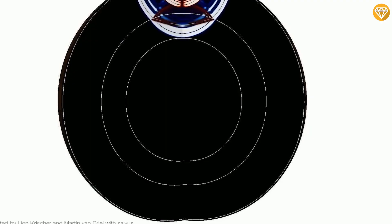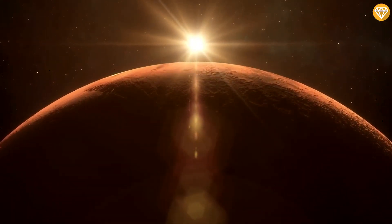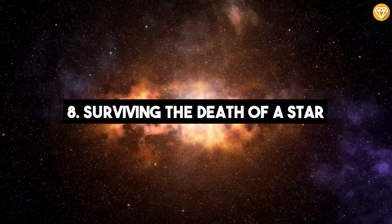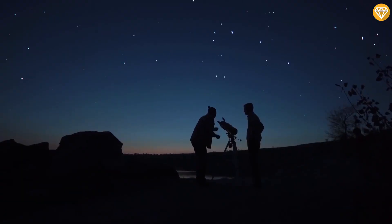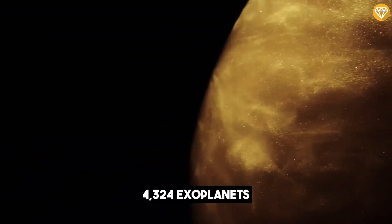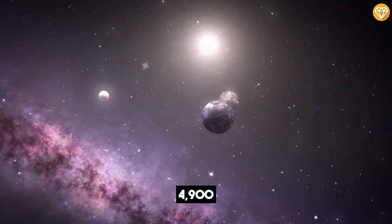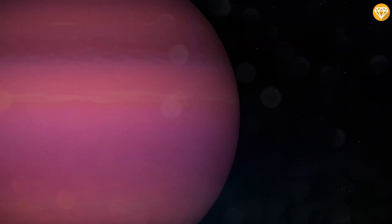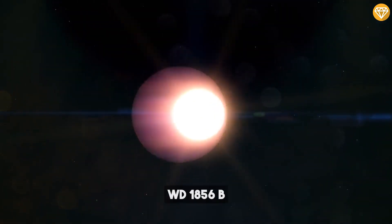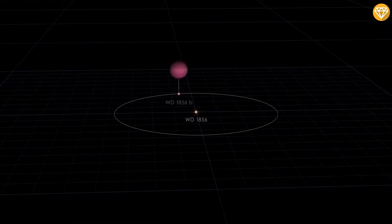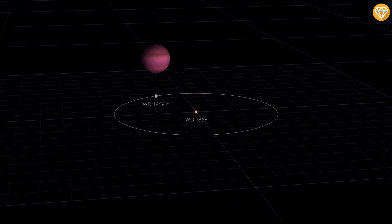Number 8: Surviving the Death of a Star. Scientists discovered 4,300 exoplanets in 2020. Since then, the total has risen to 4,900. But in September 2020, a giant Jupiter-sized planet called WD 1856 b was found orbiting a white dwarf star.